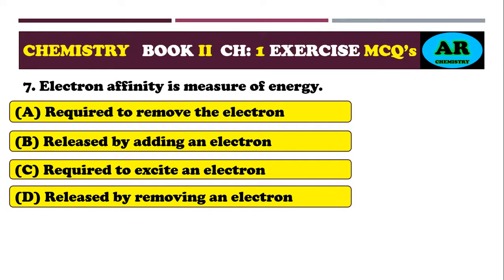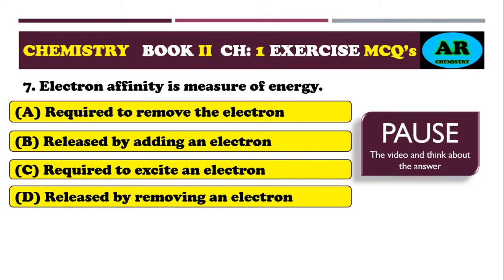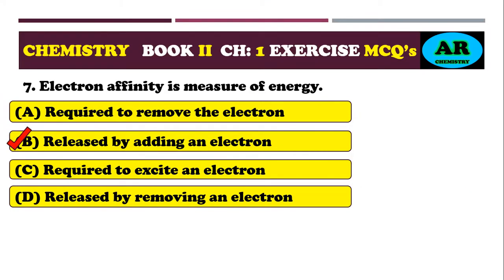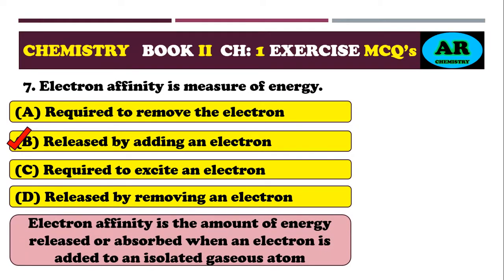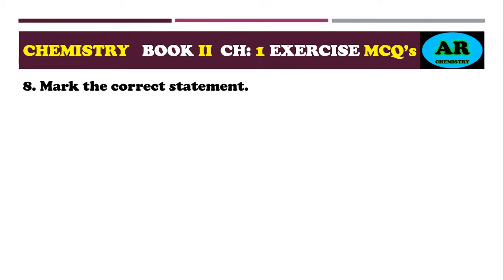MCQ 7: electron affinity is the measure of energy — option alpha: required to remove an electron, option beta: released by adding an electron, option charlie: required to excite an electron, option delta: released by removing an electron. The correct option is beta. Electron affinity is the amount of energy released when an electron is added to an isolated gaseous atom.